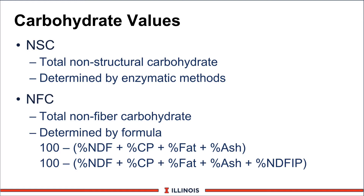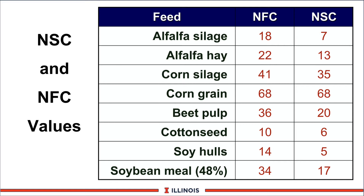Now let's look at some other carbohydrate fractions. You're going to see something called non-structural carbohydrate, or NSC — this is the enzymatic determination basically developed by Will Hoover's group at West Virginia. The more common one many of us use is the mathematical calculation of NFC, or non-fiber carbohydrate, and you can see two different formulas depending on how we handle the protein in the NDF fraction. Be sure you know which formula you're using in the model and in the feeding programs. For example, the non-structural carbohydrate is quite a bit lower in alfalfas because of the high amount of pectins. You can see corn grain values are exactly equal, but for soybean meal there are big differences. So be sure we are entering the correct value depending on which system you're using in ration formulation for energy.